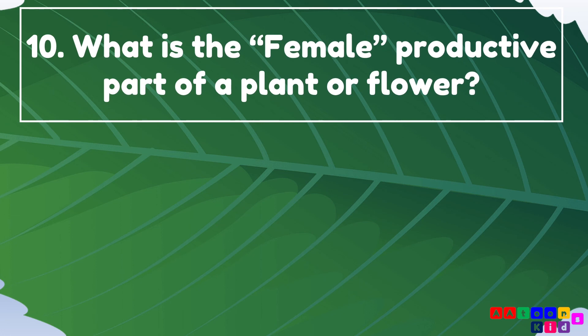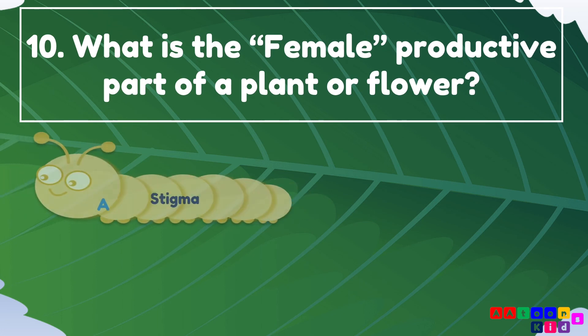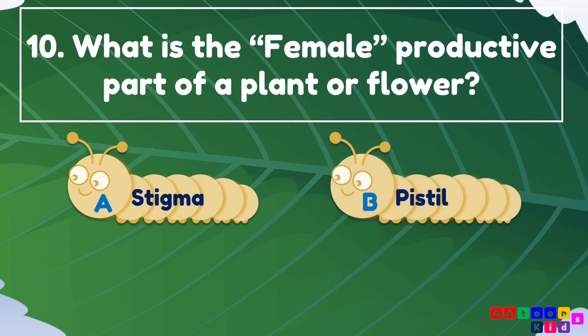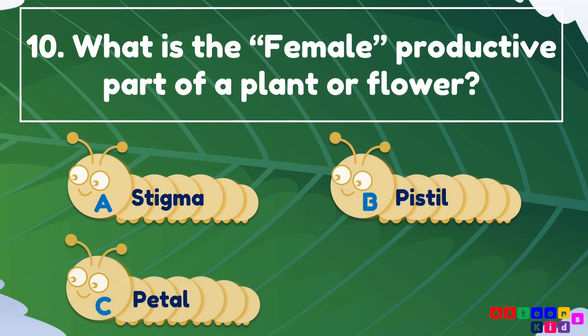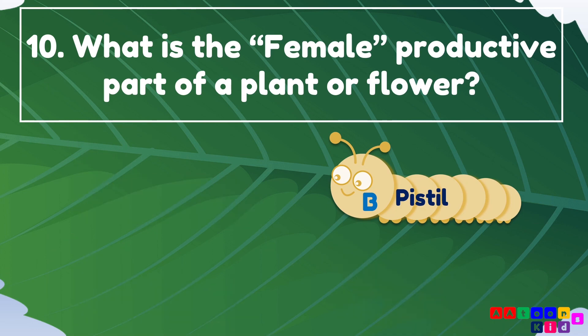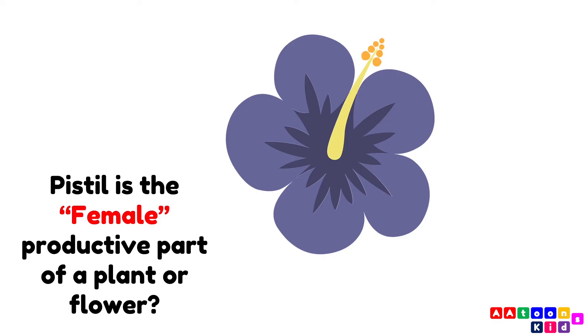What is the female reproductive part of a plant or flower? Stigma, pistil, or stamen? The answer is pistil. Pistil is the female reproductive part of a plant or flower.